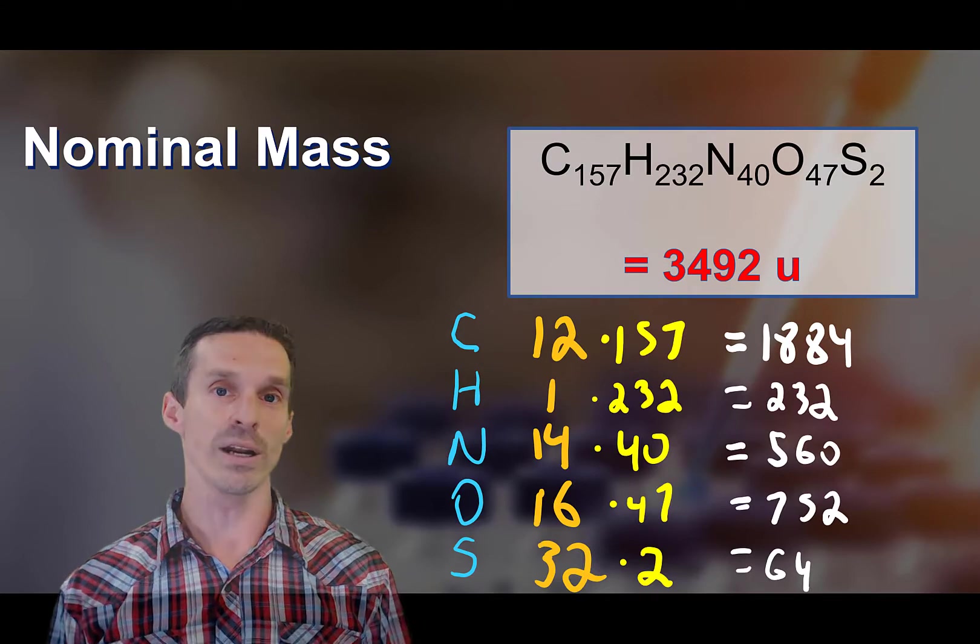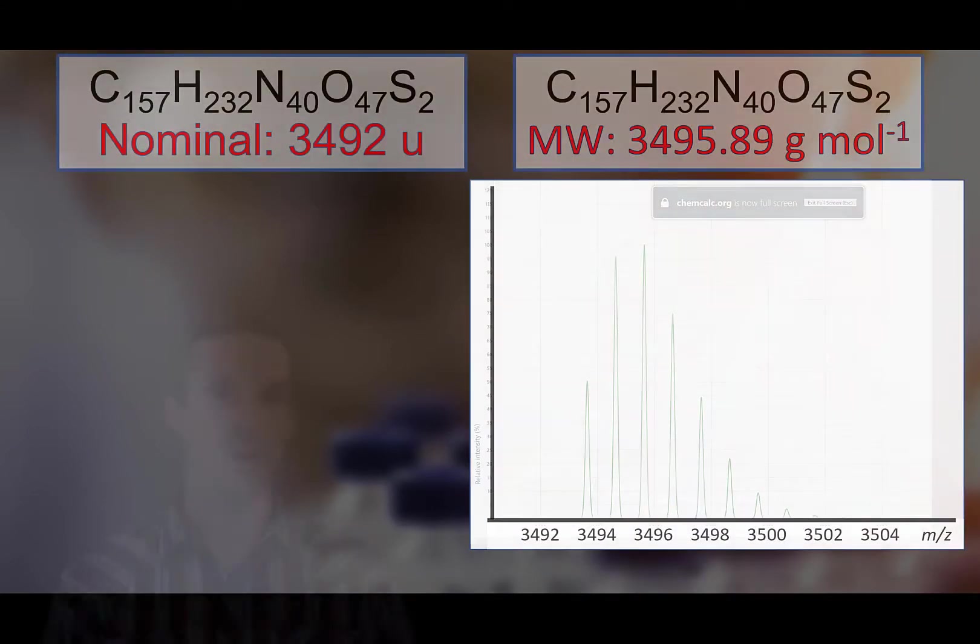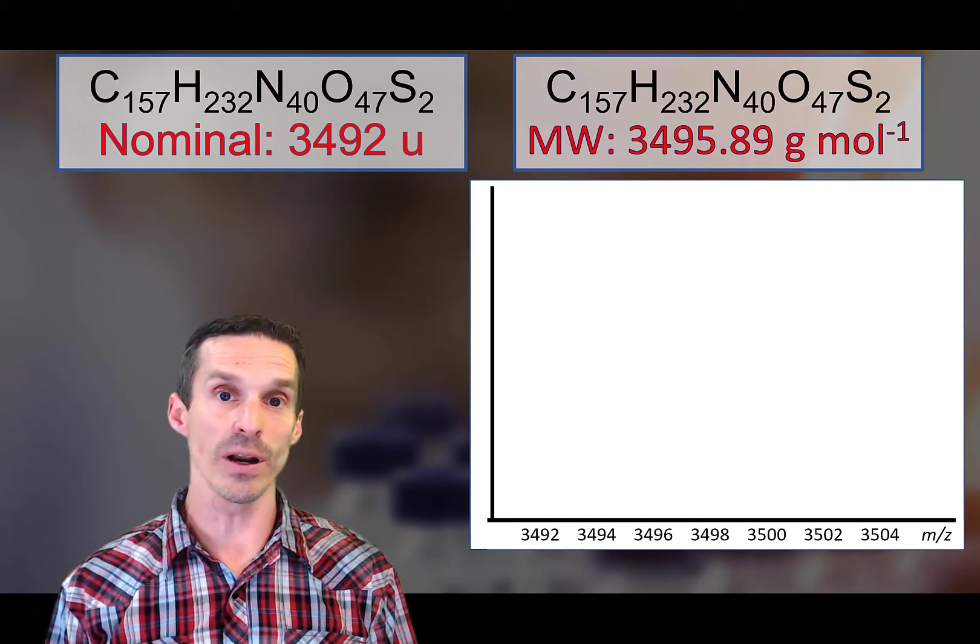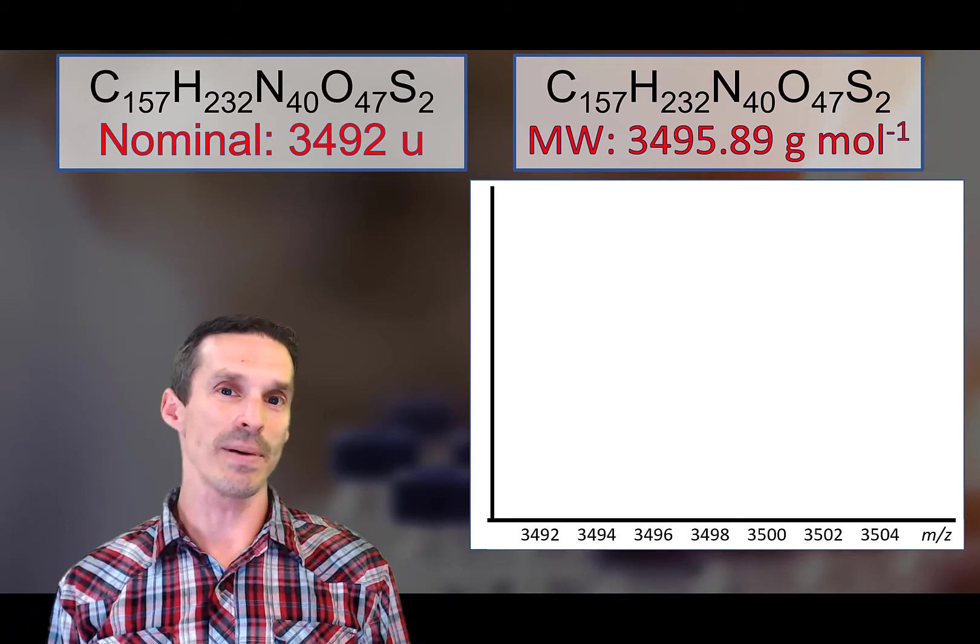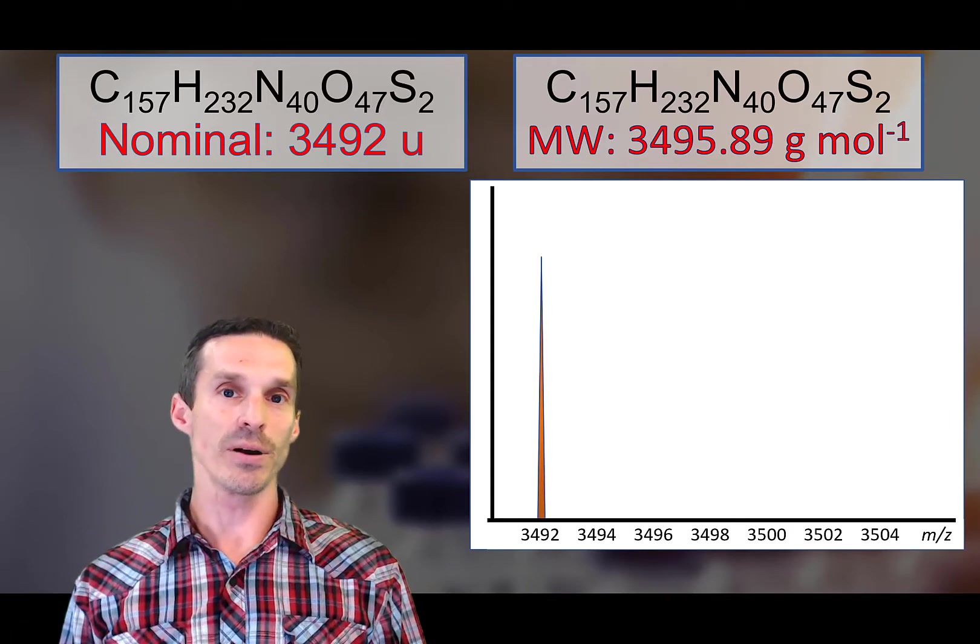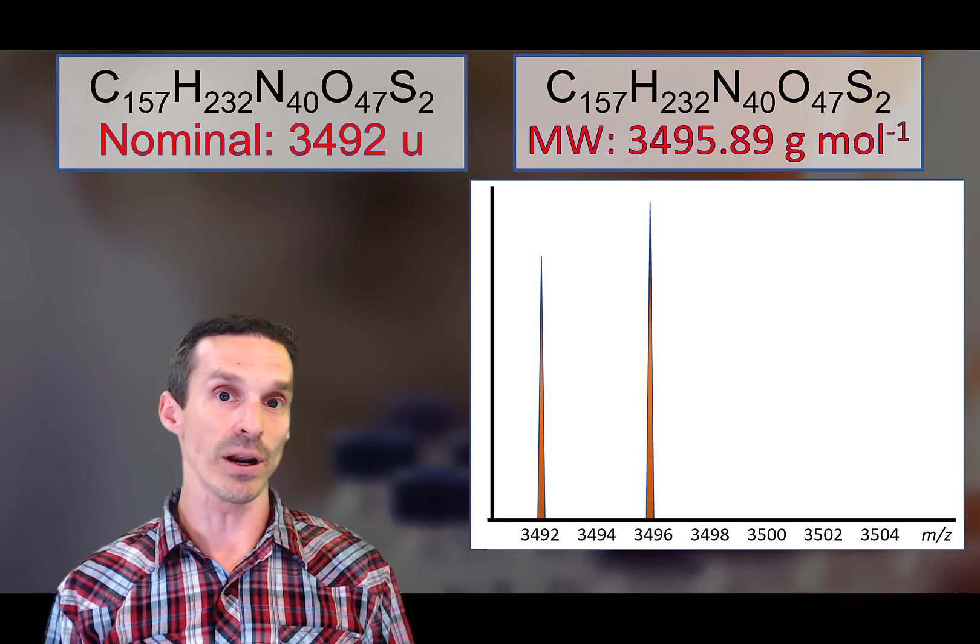You come up with a mass of 3492. So one thing you should notice right away is that these two values are substantially different from one another. We could plot them on a mass scale, so let's just sort of pretend this is a mass spectrum and I'll just put the two numbers right over here so you see that they're distinct from one another.